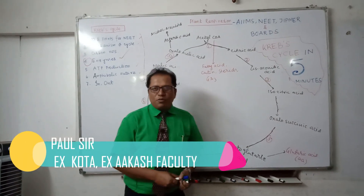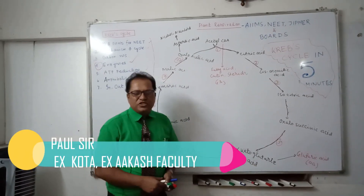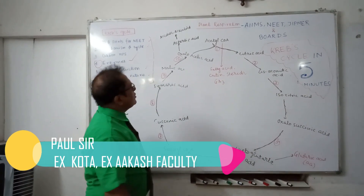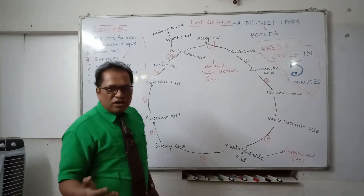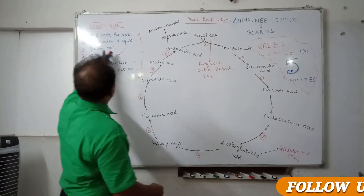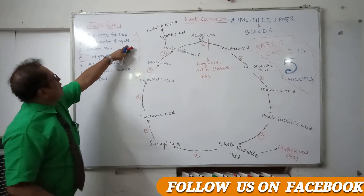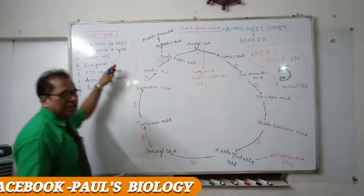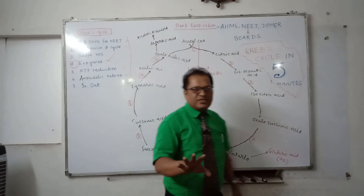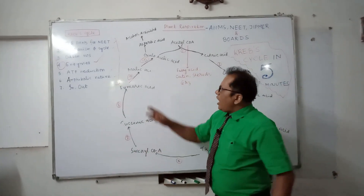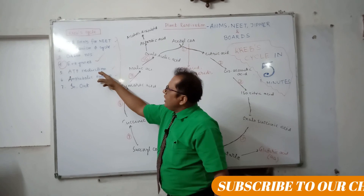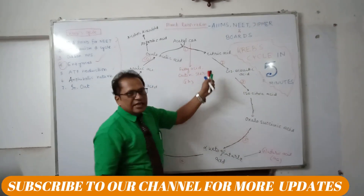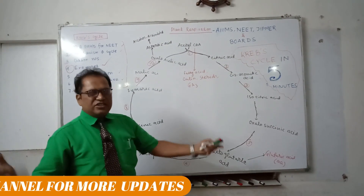Hello students, welcome to Pulse Biology YouTube channel, the most trusted band. In the last video, as per your request, we discussed the total mechanism of the Krebs cycle in 5 minutes — carbon numbers and enzyme names all in one video. Today we will see how to produce ATP and why the Krebs cycle is called amphibolic in nature.